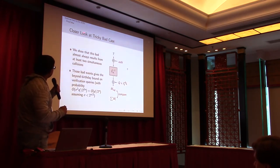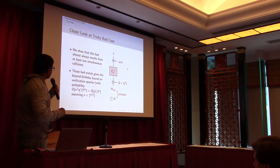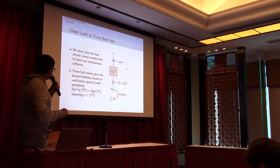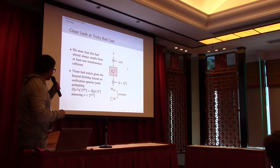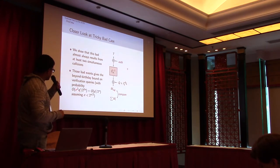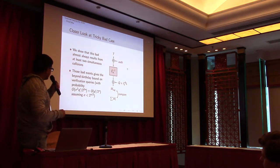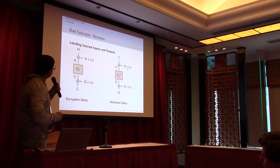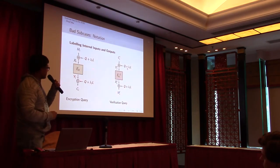So now we will show that this bad event results almost entirely from at least two simultaneous spontaneous collisions. Those bad events give the beyond-birthday-bound for verification queries with probability sigma squared times q_prime by 2^2n. If we have two simultaneous collisions, that means every bad event has two collisions. For each one of them we have sigma choices, so that's why sigma squared. And if we assume sigma is less than n by 2, then this can be stated as q_prime by 2^n, which is beyond-birthday-bound.